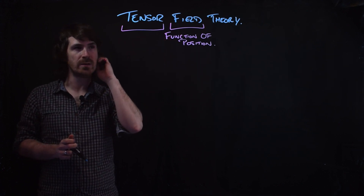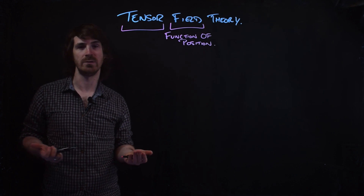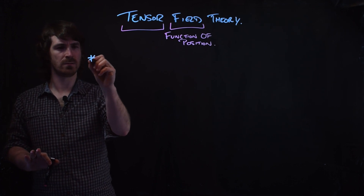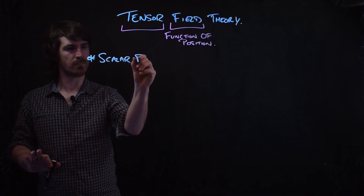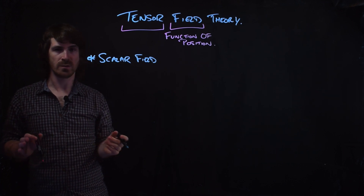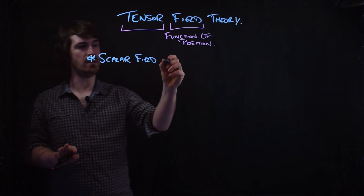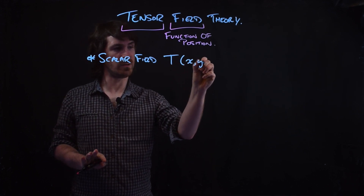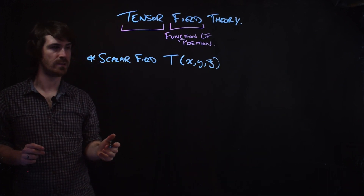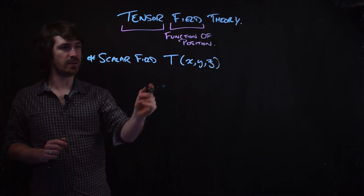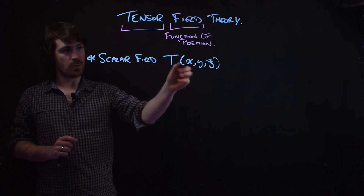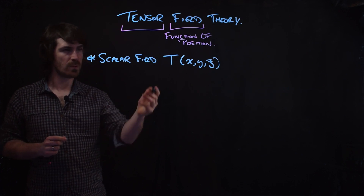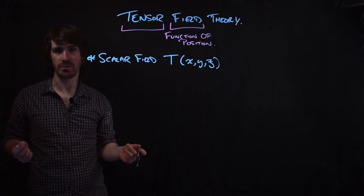Before we look at tensor fields, it's helpful to first consider what we know about scalar and vector fields. If we think about a scalar field — let's call it T — and consider a three-dimensional Cartesian coordinate system with X, Y, and Z, this scalar field takes the coordinates and returns a number, something with magnitude only. This could represent, for example, the temperature at every point in a room.